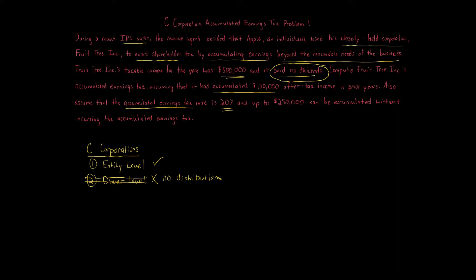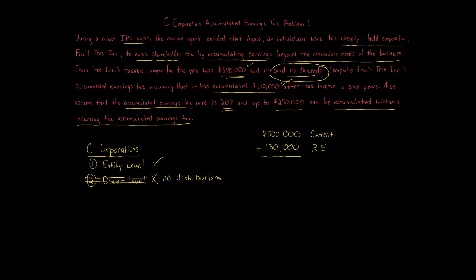You get up to $250,000 of accumulated earnings that can be sheltered — that amount can change depending on the year. The way we calculate this is pretty simple. We take the $500,000 of earnings this year and add the accumulated earnings of $130,000 from prior years — think of that as the retained earnings account from a tax standpoint. Adding those two numbers together gives us $630,000.